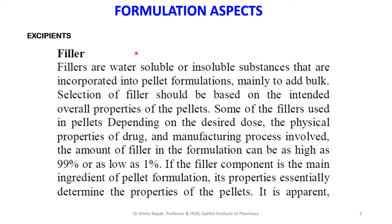However, if the two actives are incompatible with each other and need to be separated, two sets of pellets are manufactured — one set containing drug A and a second set containing drug B. Both types of pellets can be color-coded, for example drug A pellets green and drug B pellets blue. The green and blue pellets are physically mixed together gently and then the free-flowing blend of pellets is incorporated into hard gelatin capsules or soft gelatin capsules.